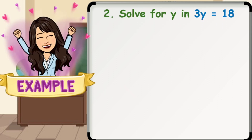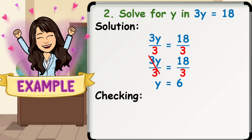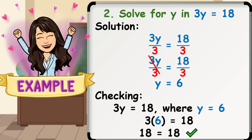Number 2: solve for y in 3y equals 18. First, isolate y by using DPE or the Division Property of Equality — divide both sides of the equation by 3. Remember to use DPE if the variable is multiplied by a constant. Simplifying: 3y divided by 3 gives us y, and 18 divided by 3 is equal to 6. Hence, the solution is y equals 6. Checking: substituting 6 in place of y gives us 3 times 6 equals 18, that is 18 equals 18, which indicates our solution is correct.